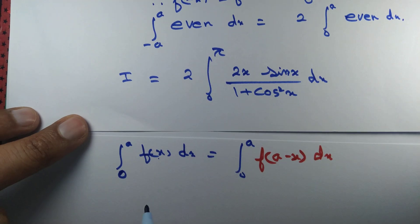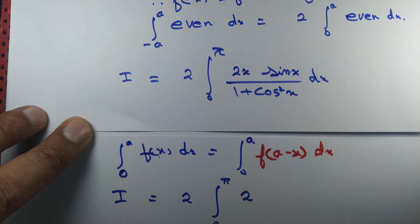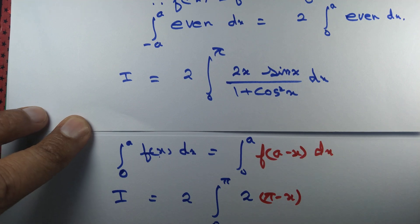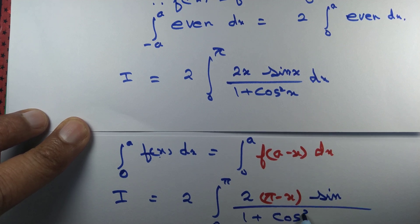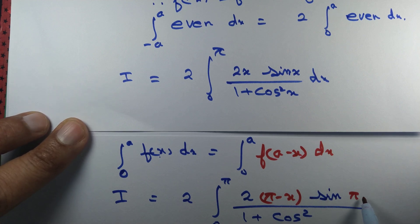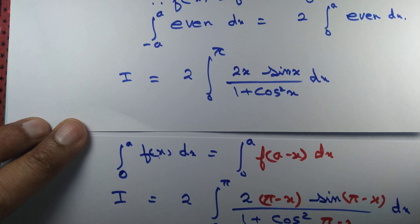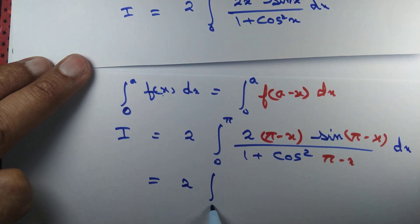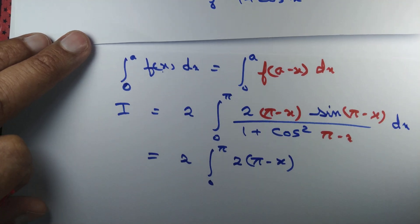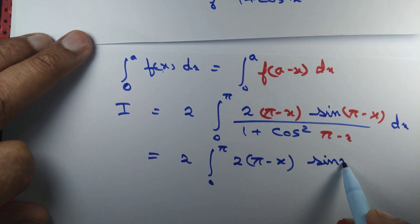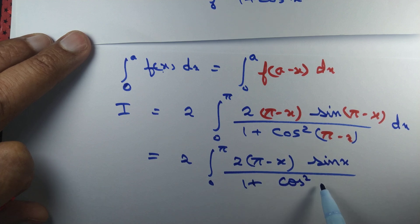Let's apply that result. So I equals 2 times the integral from 0 to π, replacing x with π minus x. We get 2(π − x) times sin(π − x) divided by (1 + cos squared(π − x)). Now, sin(180° − θ) = sin θ, and cos(180° − θ) = −cos θ, but since it's squared, we get cos squared x.